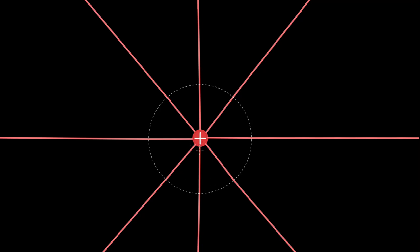The electric field lines within this sphere accelerated with the charge — they remain stuck to it. But the field far outside this 10-meter-radius sphere has no idea that the charge has accelerated. The electric field outside this sphere is exactly the same as when the charge was in its original position — it is still in the old state.